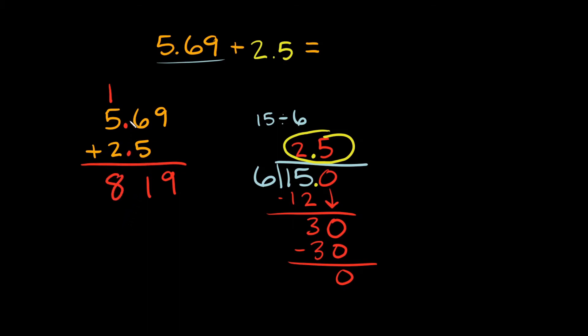And then last thing we have to do is just bring our decimal down. So, your decimal is right here. Just bring it straight down right there. So then this would be your answer right here: 8.19. We'll write it up here, 8.19.